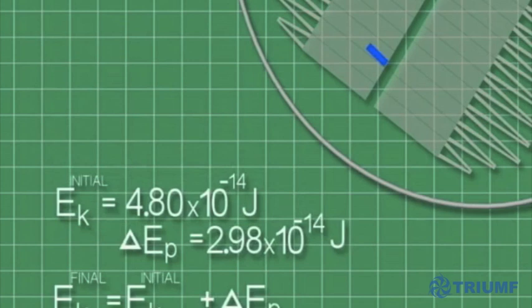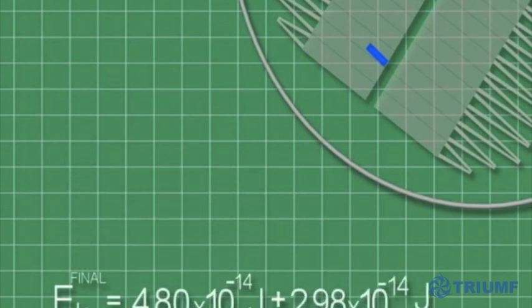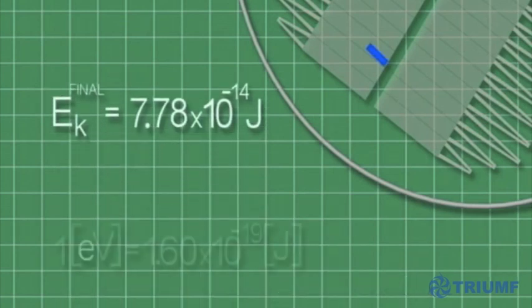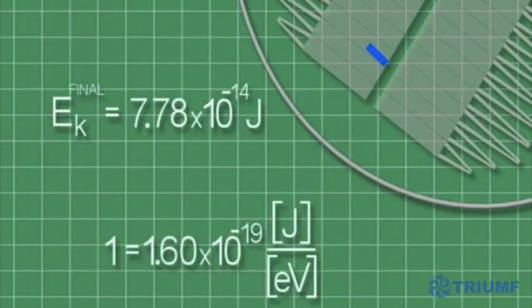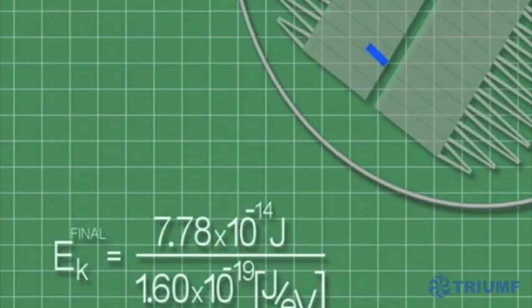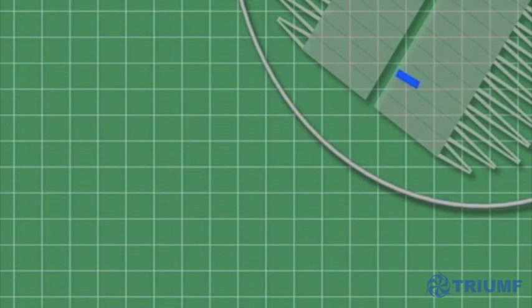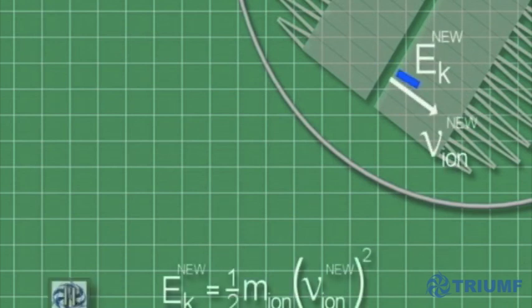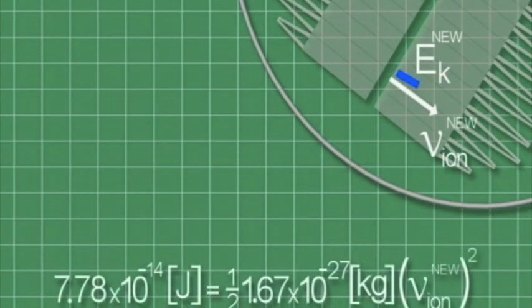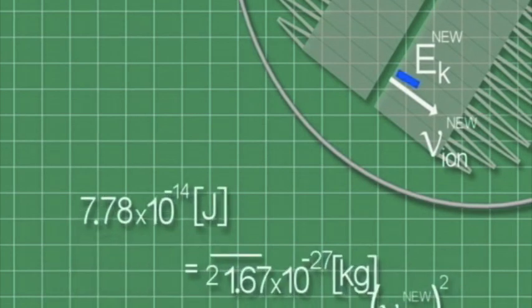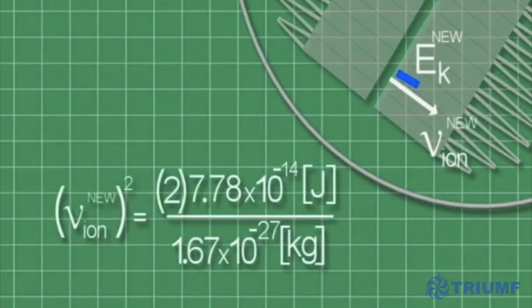Adding the two values together, we get the final kinetic energy, which is 7.78 times 10 to the minus 14 joules, or 486,000 electron volts, which is a unit of measurement preferred by Triumph scientists. The new velocity of the ions can be found from this new kinetic energy. Let's determine the value by rearranging the formula and substituting in the known values for the ion's mass and the new velocity.